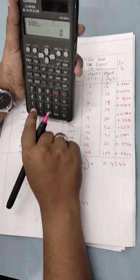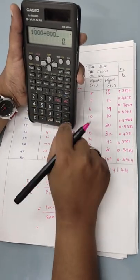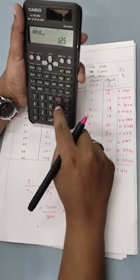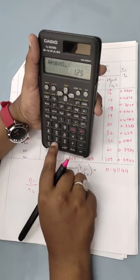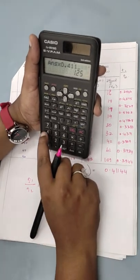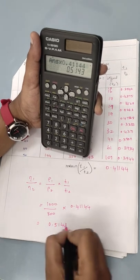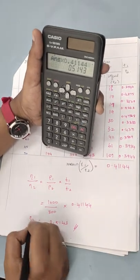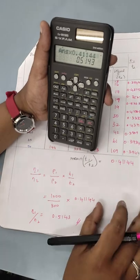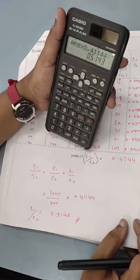This is equal to first 1000 divided by 800 will be 1.25. So answer into this value, 0.41144, it is going to be 0.5143. This is going to be your comparison of two liquids, what I have calculated.